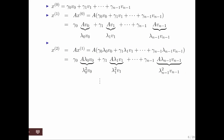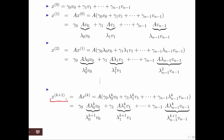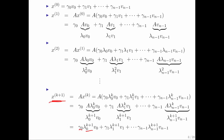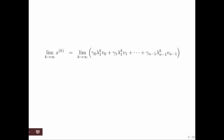We can keep hitting that vector and multiplying by matrix A. What we eventually end up with is vector x_{k+1}: gamma 0 times lambda 0 to the k+1 power times v0, plus gamma 1 times lambda 1 to the k+1 power times v1, and so forth. Since lambda 0 is the eigenvalue largest in magnitude, raising it to the kth power means that term dominates all others, and eventually this vector will lie in the direction of v0.